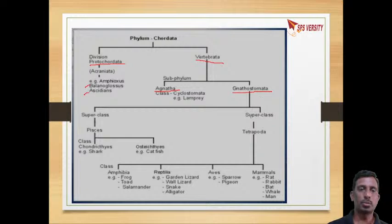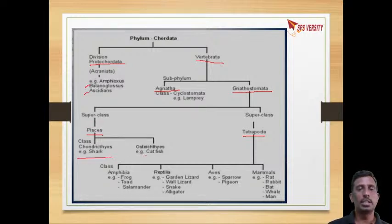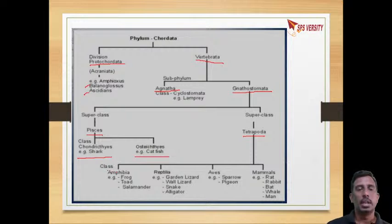In Gnathostomata there are two superclasses: Pisces and Tetrapoda. Pisces means fishes — it has two classes, Chondrichthyes (cartilaginous fishes) and Osteichthyes (bony fishes). In Tetrapoda there are four classes: Amphibia, Reptilia, Aves, and Mammalia.